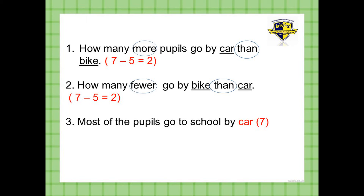Remember what we said — fewer means less. So we're going to put a circle on 'fewer', then put a circle on 'van' and a line under 'bike' and a line under 'car'. We look at the bigger number, which is the car — seven. We put seven minus five, equals two. So the pupils who go by bike are fewer by two than the pupils who go by car. They are fewer by two pupils, meaning they are less than the ones who go by car.